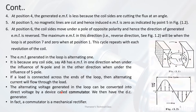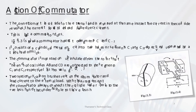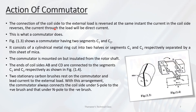The alternating voltage generated in the loop can be converted into direct voltage by a device called the commutator. The commutator is a mechanical rectifier which converts AC voltage into DC voltage — AC quantity into DC quantity. The connection of the coil sides to the external load should be reversed at the same instant the current in the coil side reverses, so that the current through the load will be directed as positive to negative.